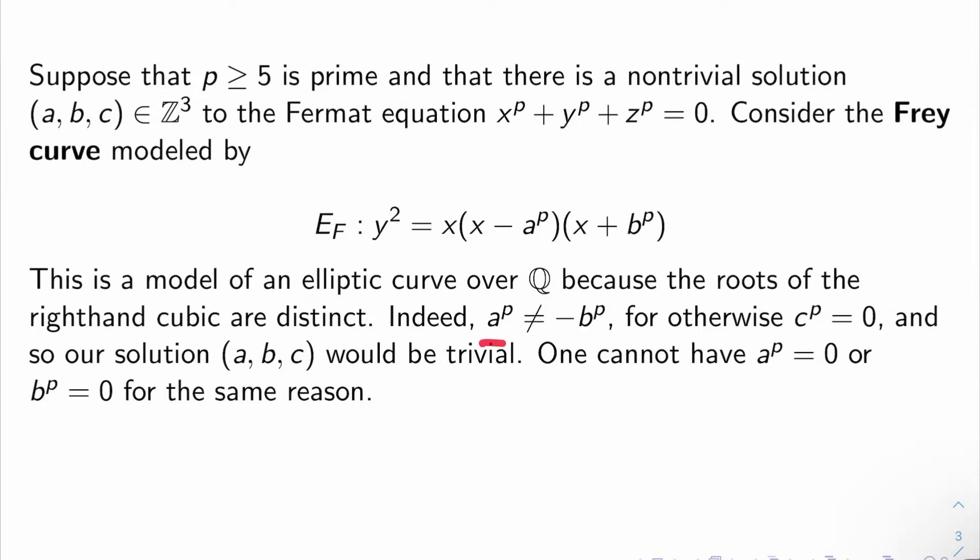because the roots on the right-hand side here are distinct. For example, a^p can't be negative b^p, because otherwise c^p would be 0, and so our solution a, b, c would be trivial, which would contradict the non-triviality. Similarly, you also can't have a^p = 0 or b^p = 0, because then a or b would be 0, and again our solution wouldn't be non-trivial. So this is actually an elliptic curve, a Weierstrass model for an elliptic curve over the rationals.